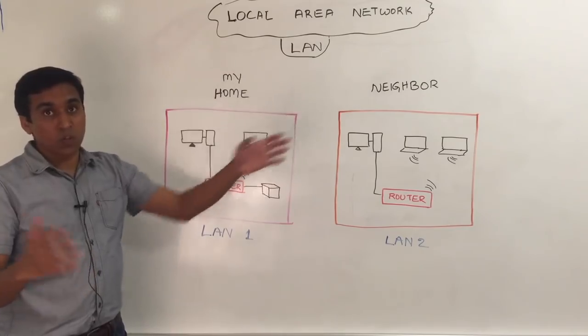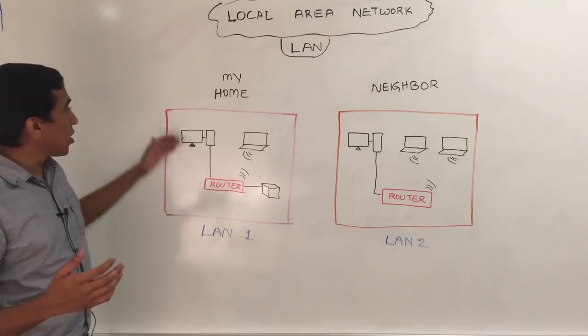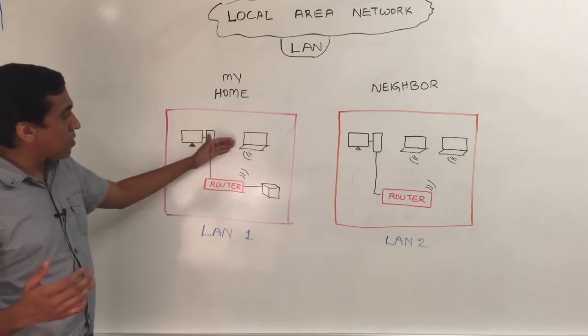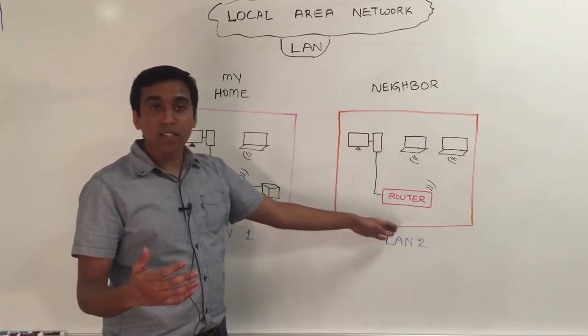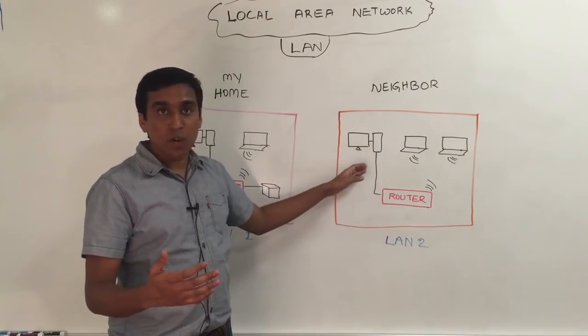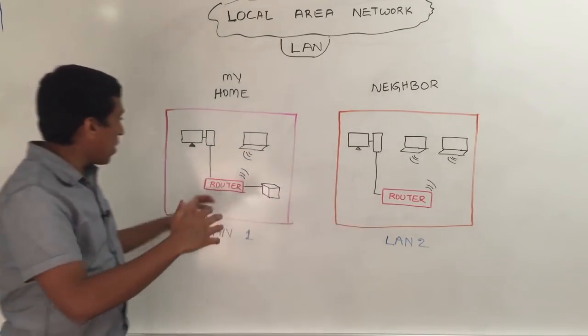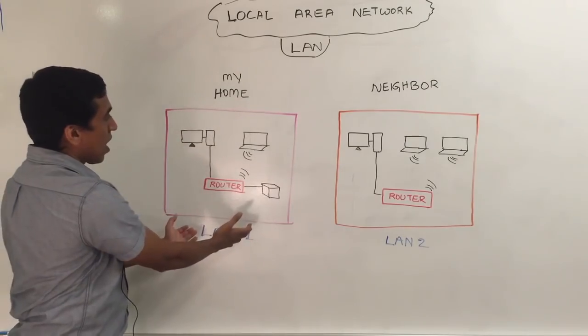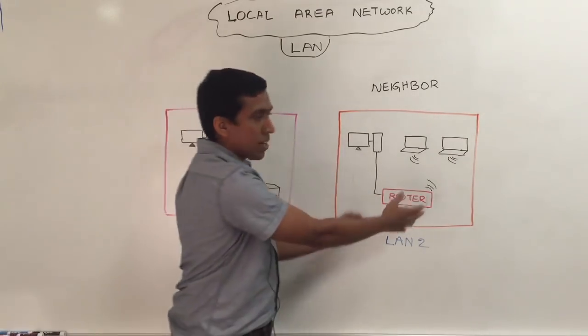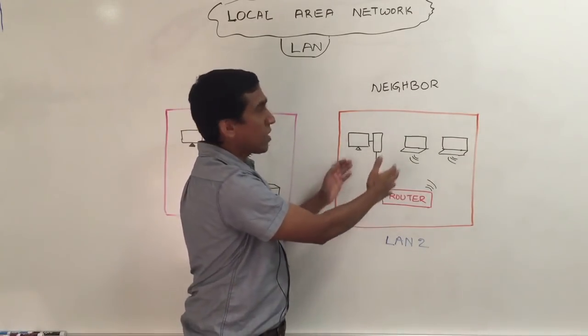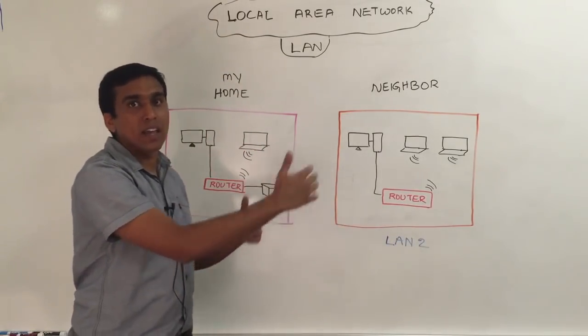A LAN is a local area network. Imagine you have your home and you have your own wireless router. You got your desktop connected, your laptop connected, and a printer connected to this router. And your neighbor has a similar setup. He has his own router, a desktop is connected, and he's got two laptops. They're all in their own network. This network which is in your home is a LAN. It is local to your home. And this particular network in your neighbor's house is a different LAN. So these two are two different local area networks.